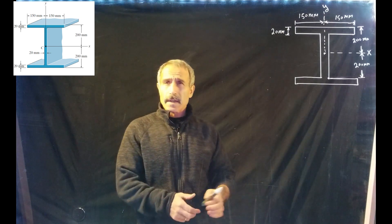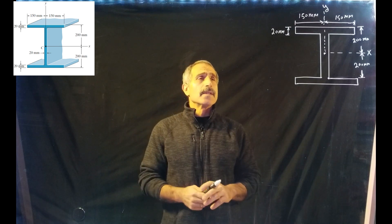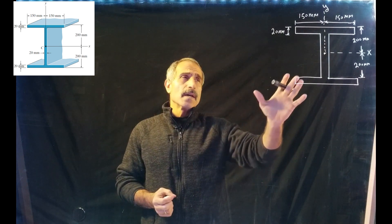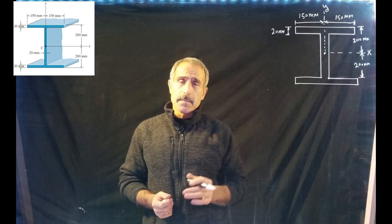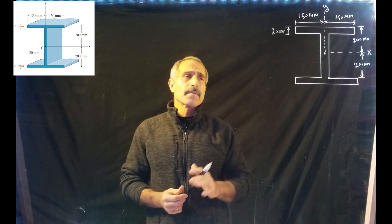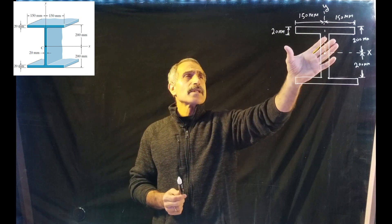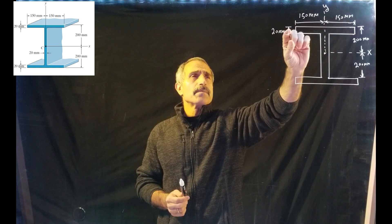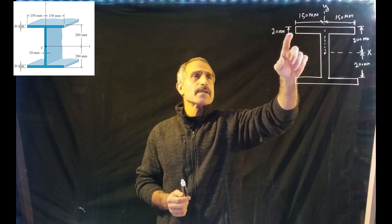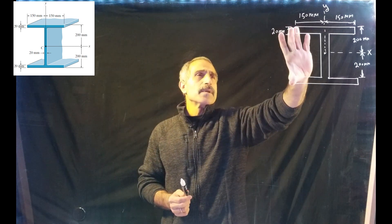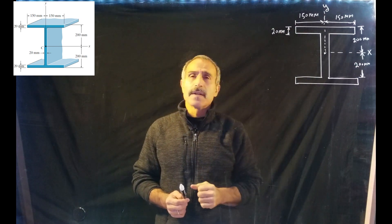Welcome back to another lecture. This one is about taking the moment of inertia of this shape, which is an I-beam. If you look at the I-beam, it has dimensions on top of 300 millimeters wide. Both the flange and web are 20 millimeters thick, and then the height of the I-beam will be 400 millimeters.